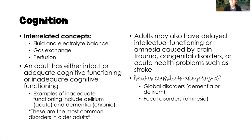There are three interrelated concepts to cognition: fluid and electrolyte balance, gas exchange, and perfusion — all of which we've already talked about in this core concept series. If you missed those videos or would like a refresher, they will be linked in the description box below. Each of these interrelated concepts can result in impaired cognition.